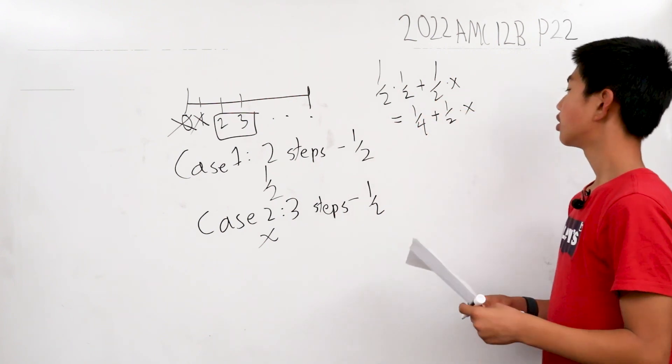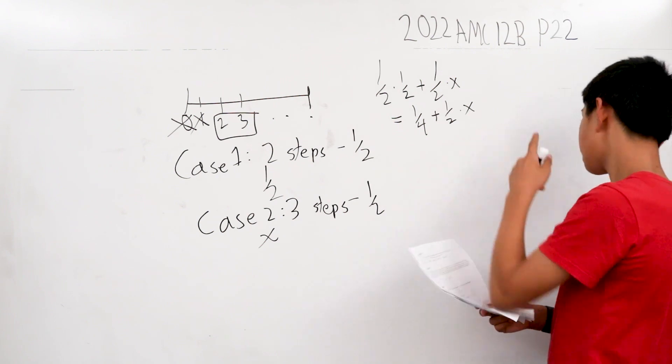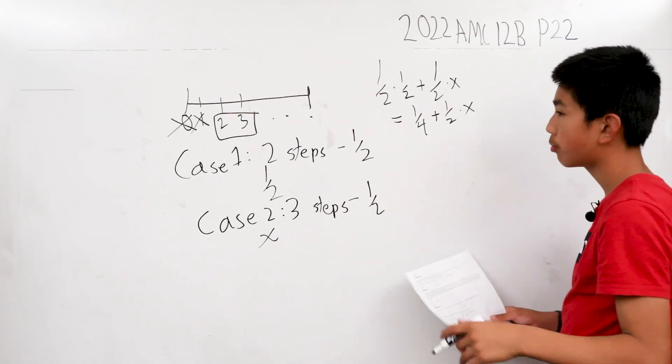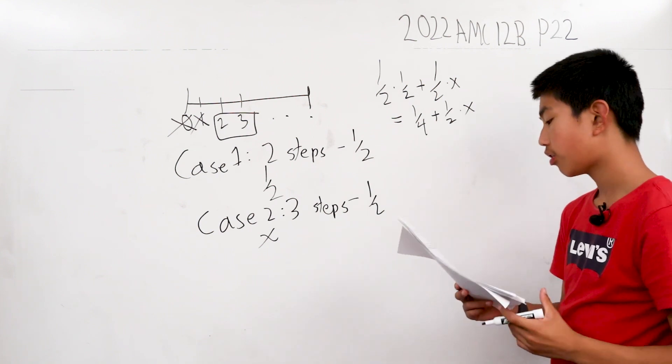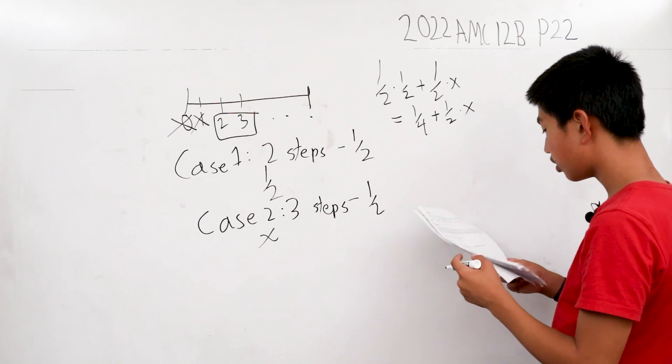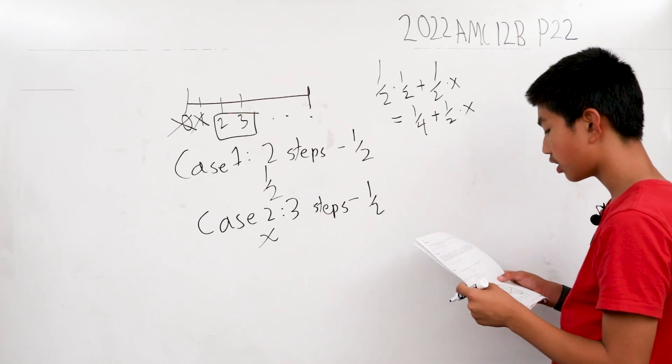Now we notice, if x is equal to 1, then that means this whole sum is 3/4. And we know that x has to be an integer.